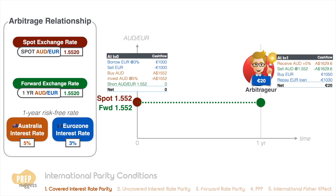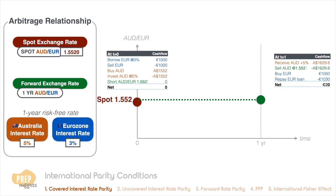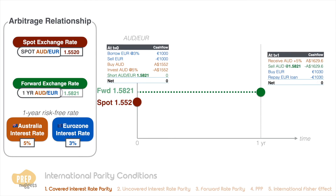Totally risk-free with zero cash outlay. As we've learned in Level 1, such arbitrage opportunities cannot persist. Arbitrageurs will pursue this opportunity — selling euros to buy AUD, which decreases the AUD per euro spot rate — and selling the AUD forward, which increases the forward exchange rate.